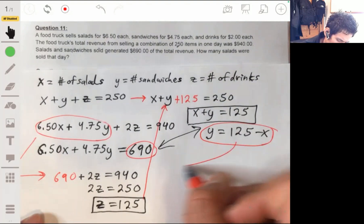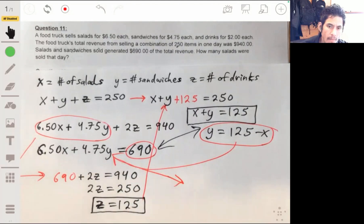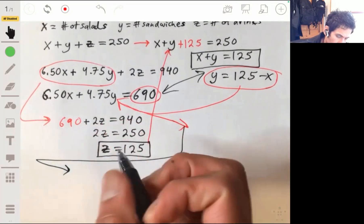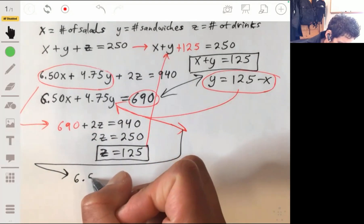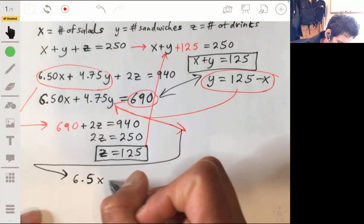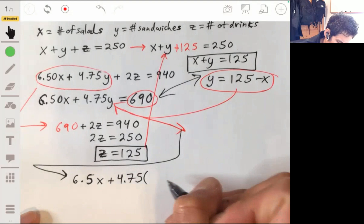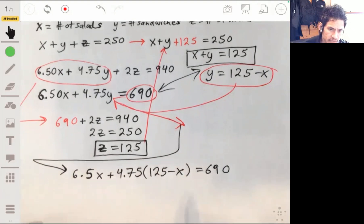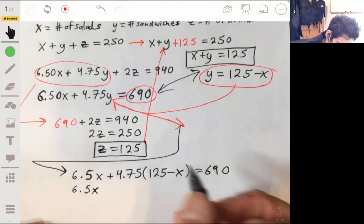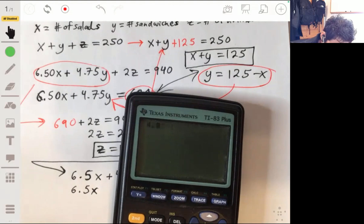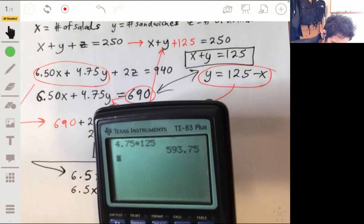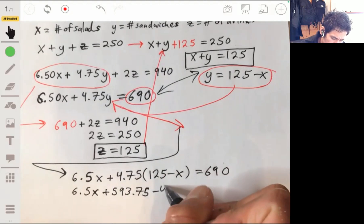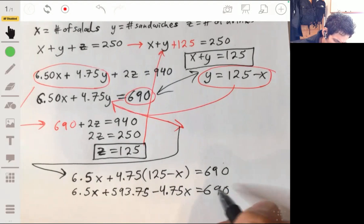So let's just set Y equal to 125 minus X. And we're going to replace this Y over here with this. So I'm going to write this down, I'm just going to write it over here so it's not all squished. So we're going to have 6.5X plus 4.75 times 125 minus X equals 690. And we just got to solve this for X. So 6.5X, 4.75 times 125.